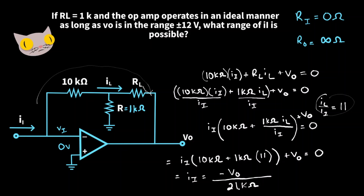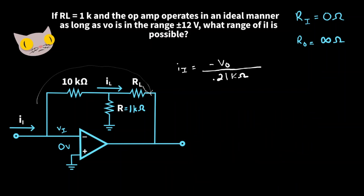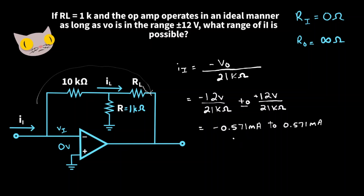That 21,000Ω came from the simplified expression. Substituting our output voltage range of −12V and +12V, we get a range from −12V/21,000Ω to +12V/21,000Ω. So the possible range of input current goes from −0.571 mA up to +0.571 mA.